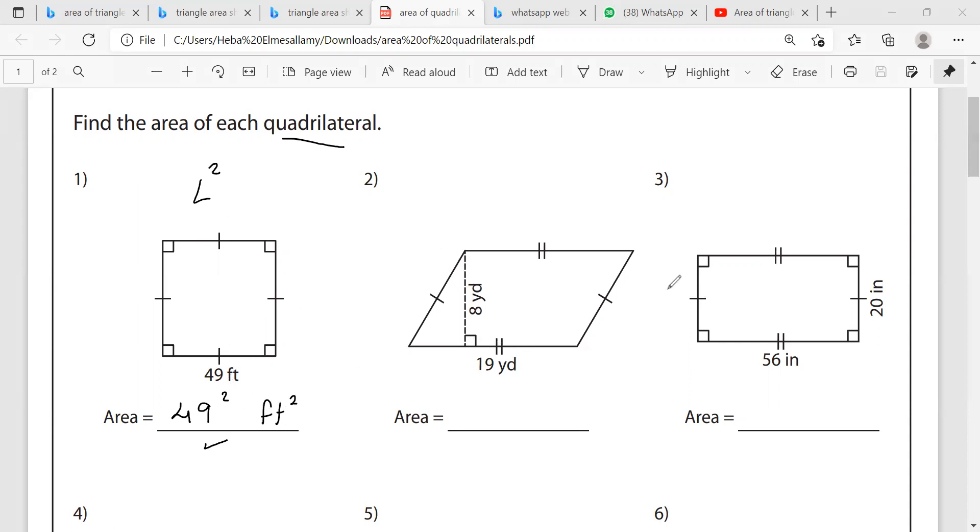The second question, I have a parallelogram. I have two pairs of parallel sides and two pairs of equal sides. I'm going to write the rule here, which is base multiplied by height. Base and height must be perpendicular sides. So here I have the height is eight yards and the base is 19 yards. So the area is 19 multiplied by eight. Use the calculator to get the final answer.